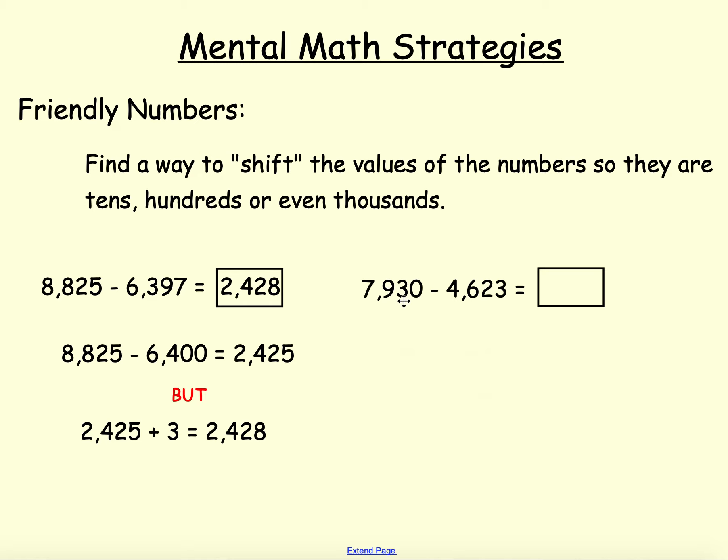Similarly, if I have 7,930 minus 4,623, mentally what I'm going to want to do is take my 623 and subtract 3 and now I'm going to have 7,930 minus 4,620, which is 3,310. Now I only took 4,620 away. I was supposed to take 4,623, so what do I need to do? I need to subtract 3 more and I get a final answer of 3,307.